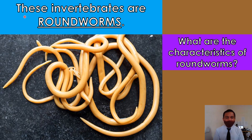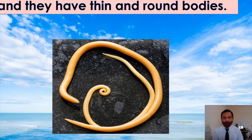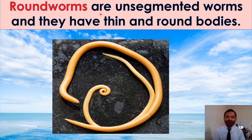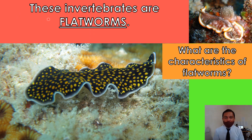These invertebrates are round worms. What are the characteristics of round worms? Round worms are unsegmented worms and they have thin and round bodies.